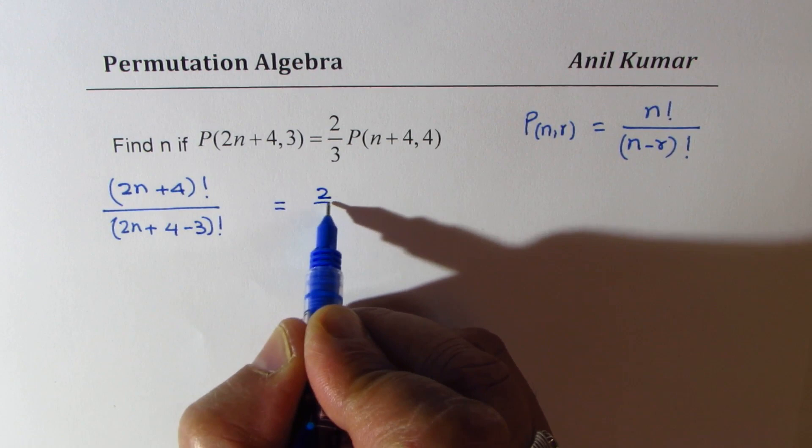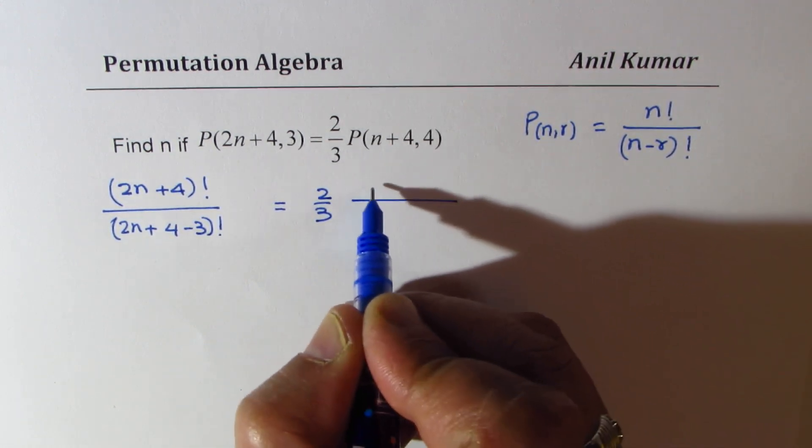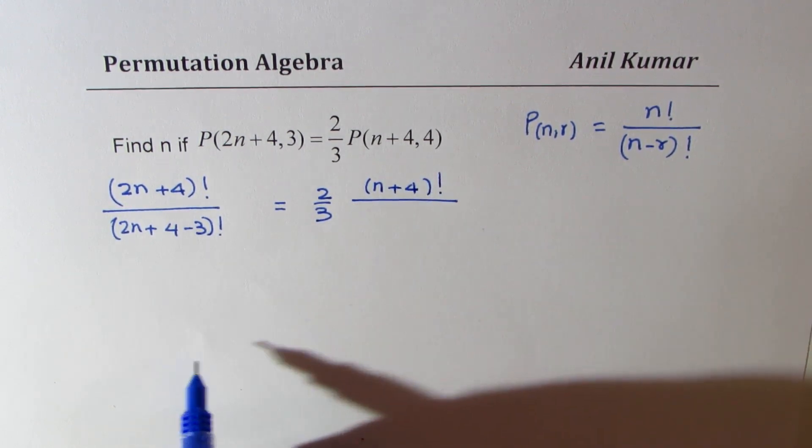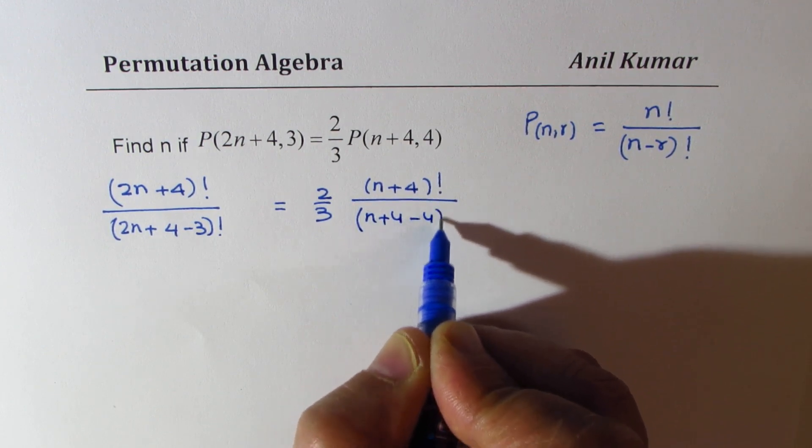On the right side, we get 2/3 times (n+4) factorial. In the numerator, we get (n+4) factorial. The denominator is (n+4-4) factorial.